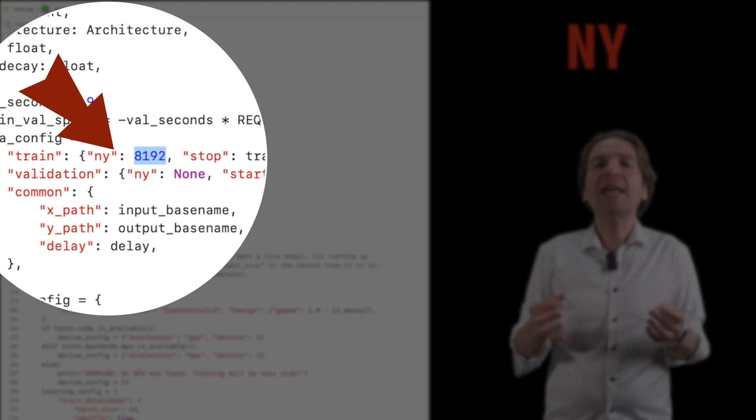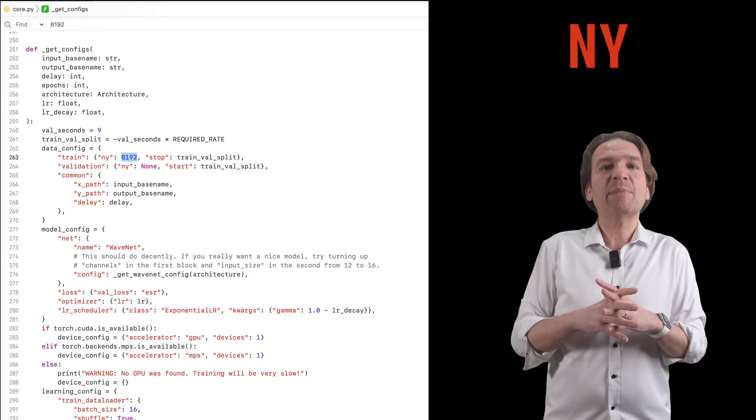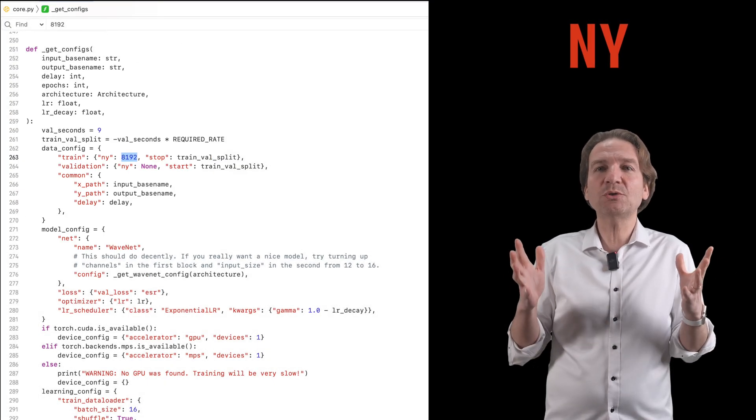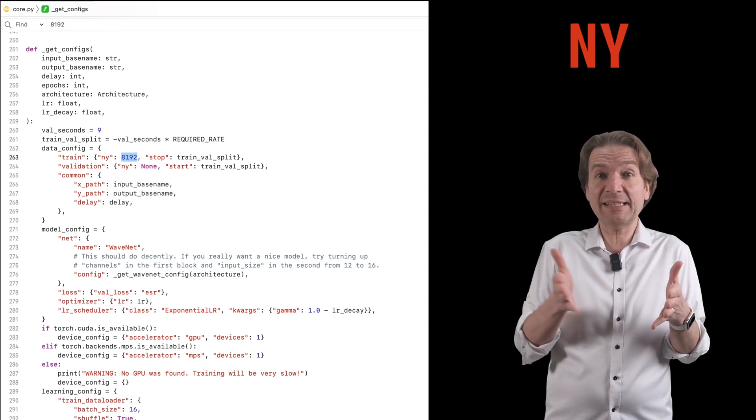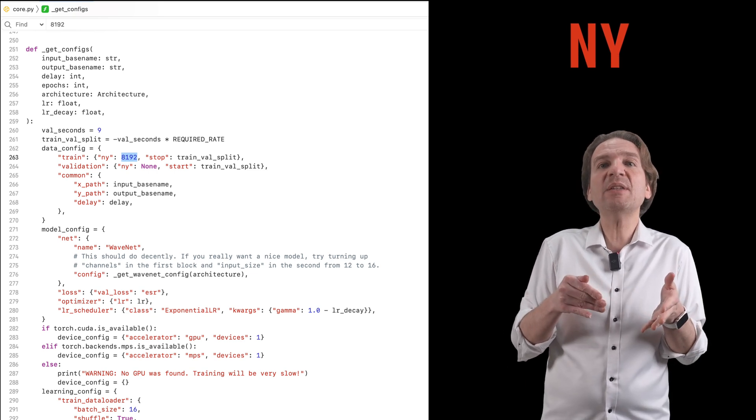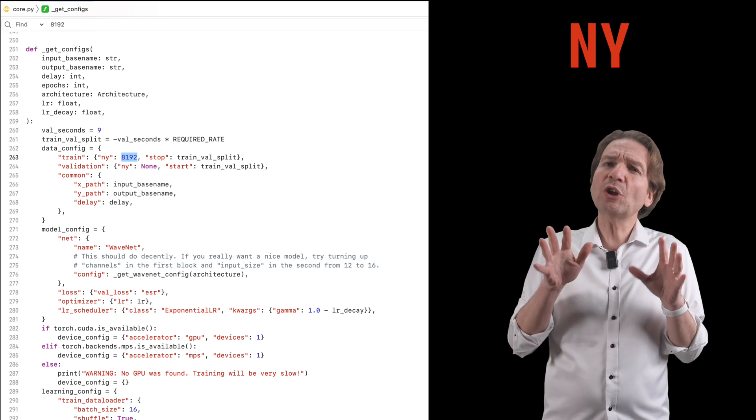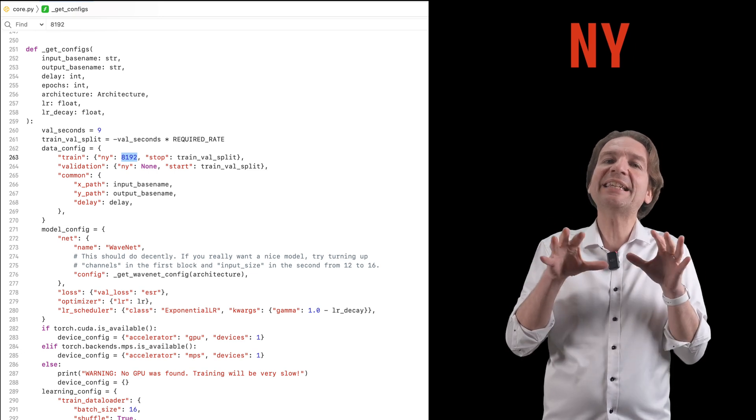The last and most mysterious parameter is the NY. It is originally set to 8192, and I've tried with 4096 and also with 2048. I'm sorry, but I have not been able to find documentation about this value. I have just noticed that the decrease in it, the processing time increase a lot, but also the quality of our profile increases.